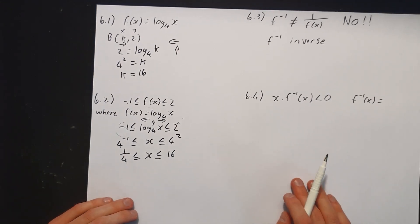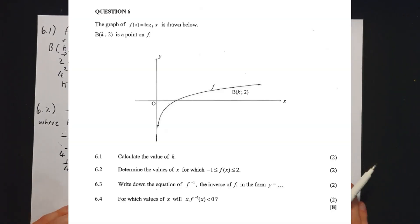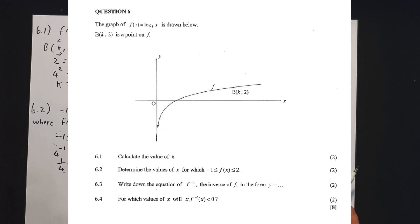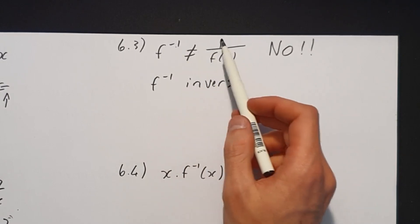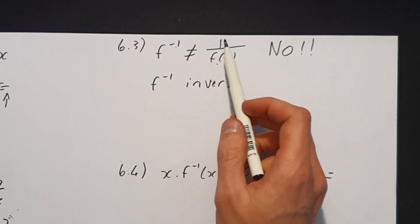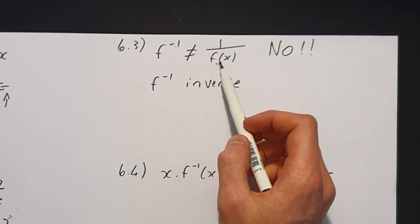The next question is 6.3. 6.3 says write down the equation of the inverse of f in the form y equals. Please note, a big no: the inverse is not 1 over the function. You do not say 1/(log₄(x)). No.